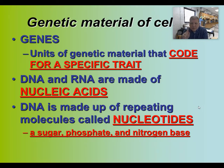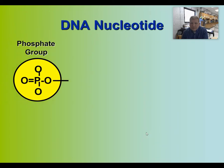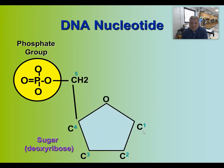One nucleotide is made up of a sugar, a phosphate, and a nitrogen base. There are four nitrogen bases: adenine, guanine, cytosine, and thymine. The sugar in a DNA nucleotide is deoxyribose — remember that anything ending in '-ose' is usually a sugar.